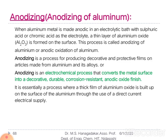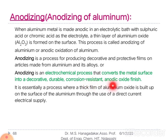Anodizing is an electrochemical process that converts the metal surface into a decorative, durable, corrosion-resistant anodic oxide finish. It is an essential process for producing a thick film of aluminium oxide.